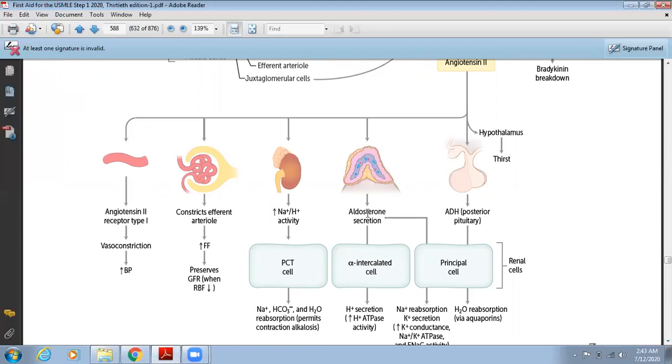Fourth, it acts on the adrenal gland and causes release of aldosterone from zona glomerulosa. The function of aldosterone is absorption of sodium and secretion of potassium, causing hypernatremia and hypokalemia. Second effect is hydrogen secretion through H+ ATPase activity.